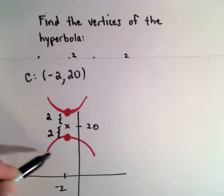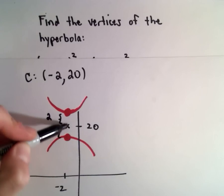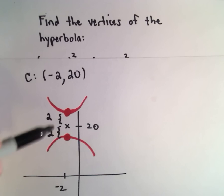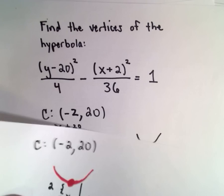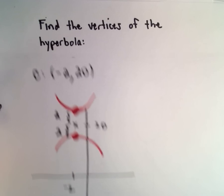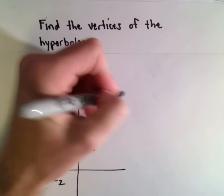So in this case, since it opens upwards and downwards, I know from the center that I'm going to move up and down to get my vertices. And again, I just take the square root of that first term, the square root of the positive 4, which is 2. And that's going to give me my vertices.